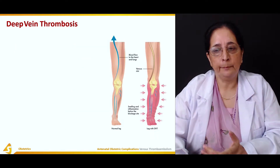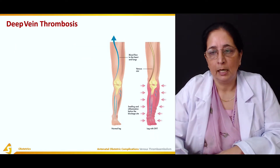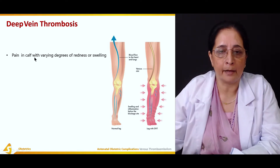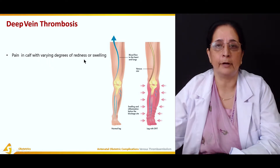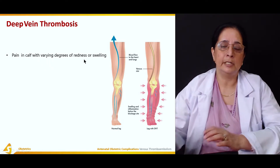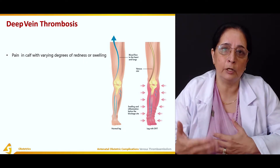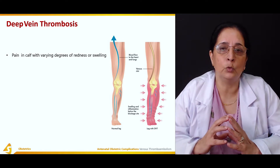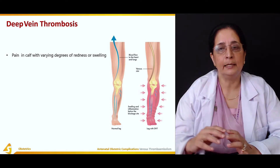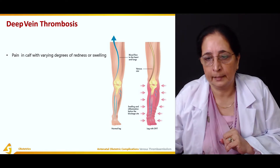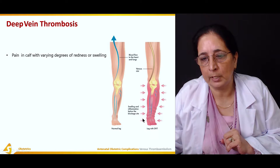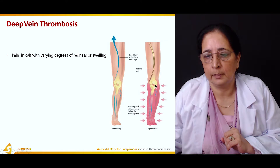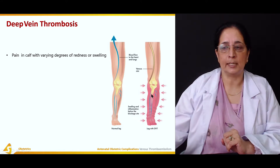Deep vein thrombosis presents with pain in the calf with varying degrees of redness or swelling. DVT is very common after surgery and can lead to swelling and pain in the calf muscles. The affected leg becomes swollen and red, with inflammation below the blockage site — a very painful condition.